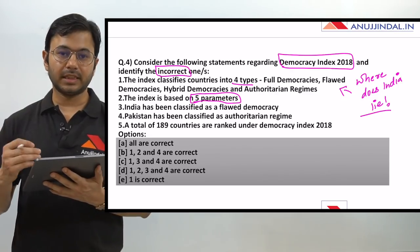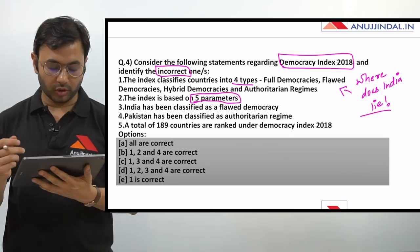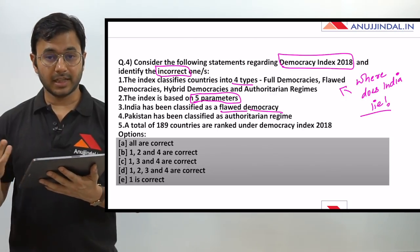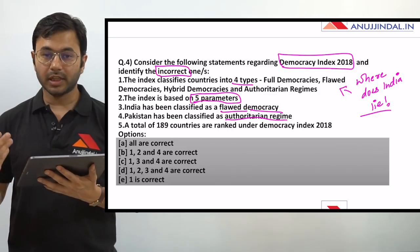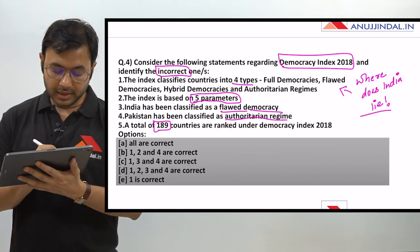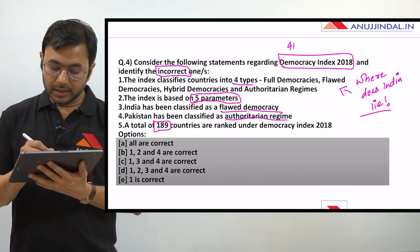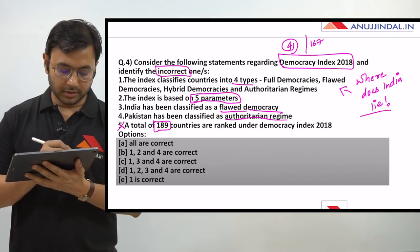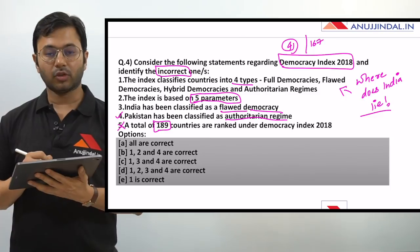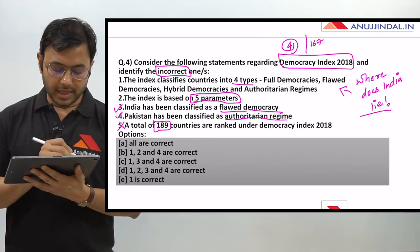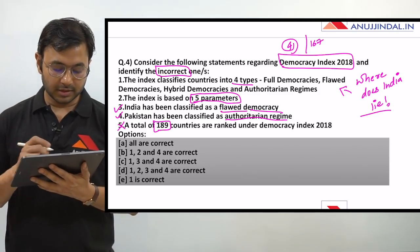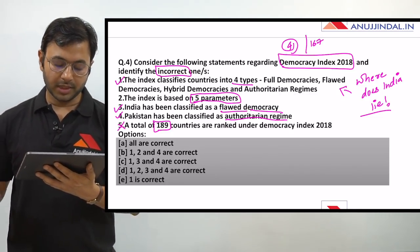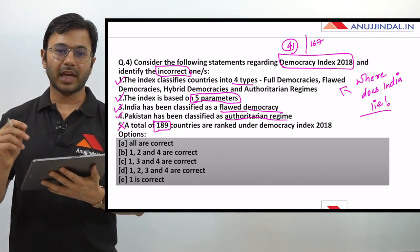The index is based on five parameters, and I have created an acronym so that it is easier for you to remember them. India has been classified as a flawed democracy. Pakistan has been classified as an authoritarian regime. A total of 189 countries are ranked under the Democracy Index 2018. India's rank in the Democracy Index 2018 is 41 out of a total of 167 countries which were analyzed. So the fifth option - 189 countries - is incorrect. Pakistan is indeed an authoritarian regime, India is indeed a flawed democracy, there are four classifications, and yes it is based on five parameters. So options 1, 2, 3 and 4 are correct, and only the fifth one is incorrect - the answer is D.